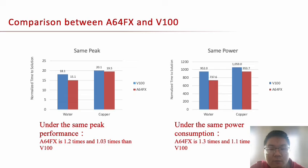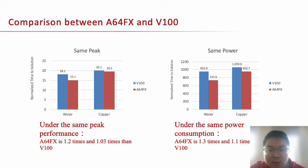Next we compared the performance of A64FX and V100. Because these two devices have different peak performance and power consumption, to be fair we compare the normalized time-to-solution with respect to peak performance and power consumption, calculated as time-to-solution multiplied by peak performance or power — lower is better. Under the same peak performance, A64FX is 1.0× and 1.03× faster than V100. Under the same power, A64FX is 1.3× and 1.1× faster than V100.